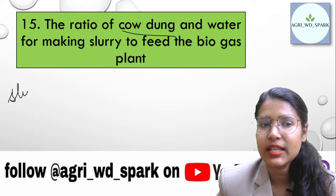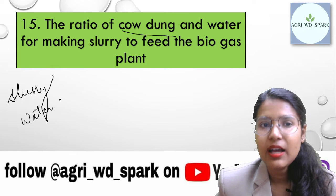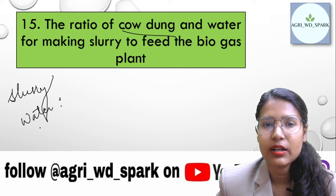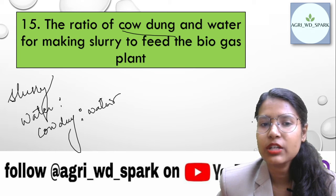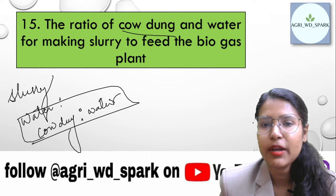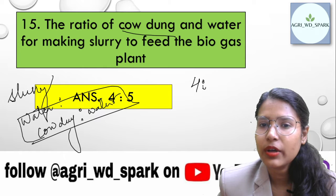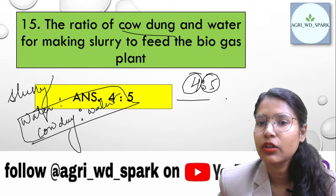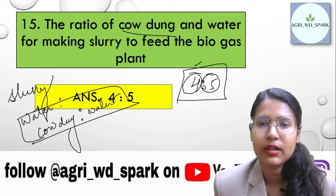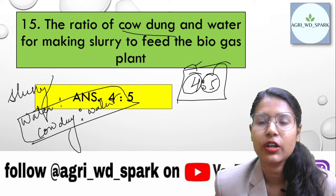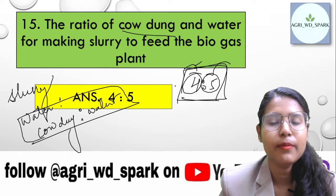When you make slurry for a biogas plant using cow dung and water, remember to keep the ratio at 4:5 — that is 4 parts cow dung to 5 parts water. You make the slurry in this ratio for the biogas plant.